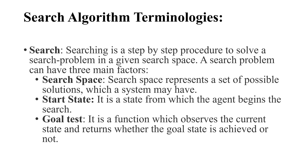A search problem can have three main factors. First is search space: it represents a set of possible solutions which the system may have — all possible solutions are within the search space. Second is start state: it is the state from which the agent begins the search, i.e., the initial position. That is your start state.